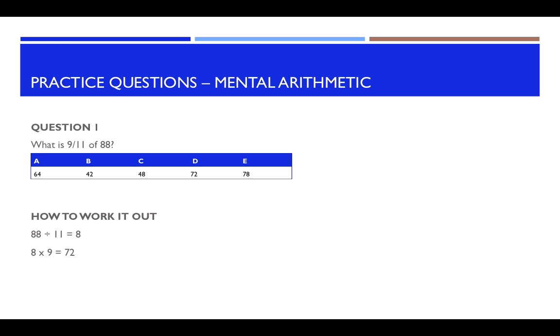How to work it out. So first of all, we would do 88 divided by 11, which is the bottom number of this fraction here. So 88 divided by 11 would give you 8. And then you would times that number by the top number of the fraction, which is 9. So 8 times 9 is 72. So your answer to this question is D.